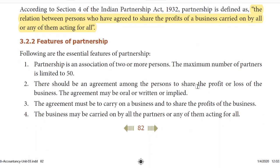Features of partnership. First, partnership is an association of two or more persons. The maximum number of partners is limited to 50. There should be an agreement among the persons to share the profit or loss of business. The agreement may be oral or written or implied. If they generate profit or loss, they will first agree on the ratio.